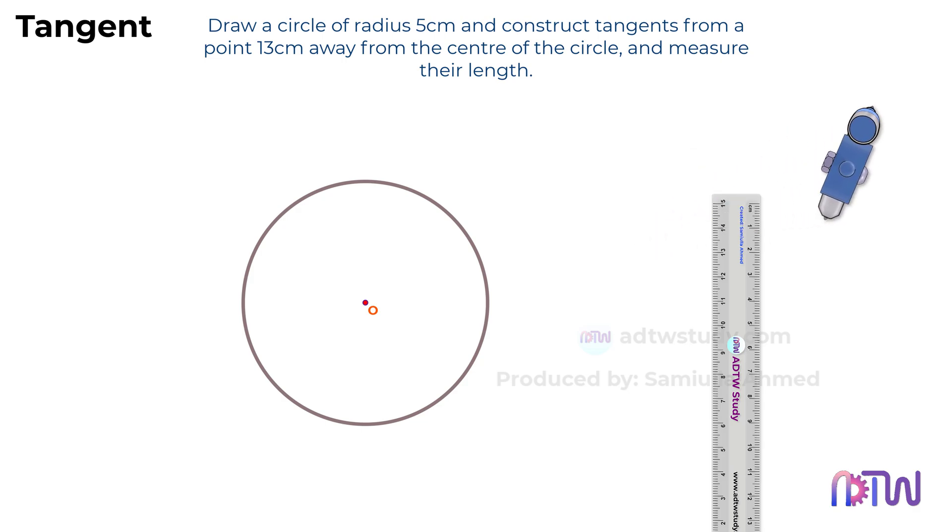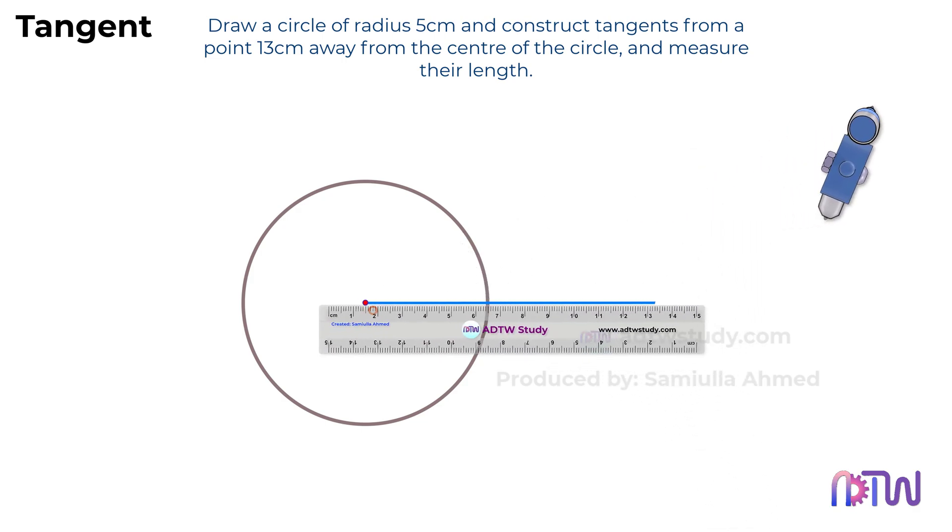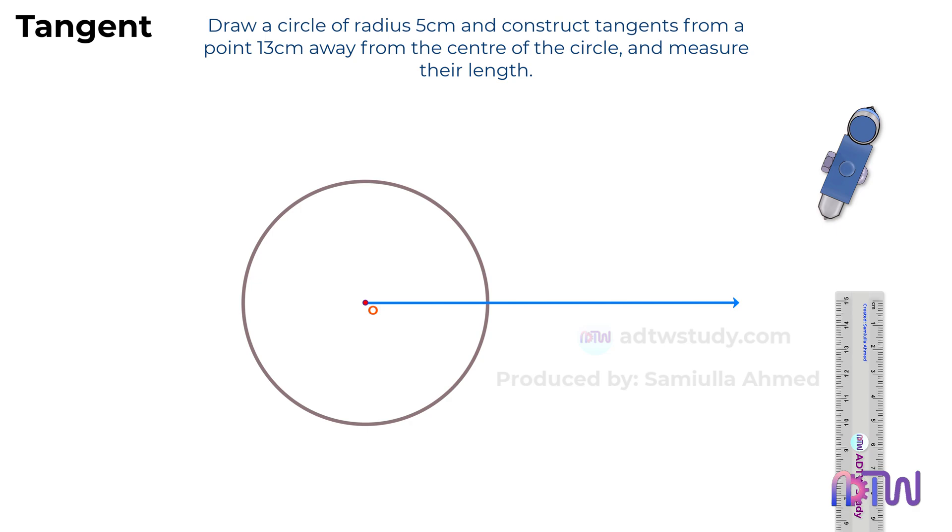After this, extend a line from the center point O of the circle as shown. The direction of this line can be anywhere, but for convenience and good appearance, let's keep it horizontal.